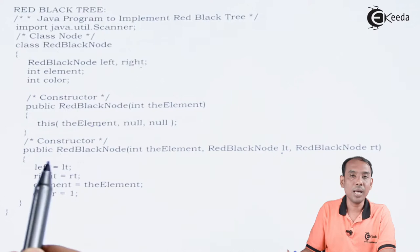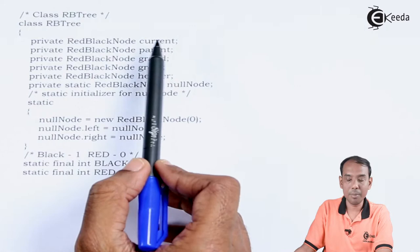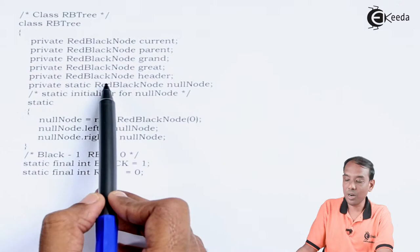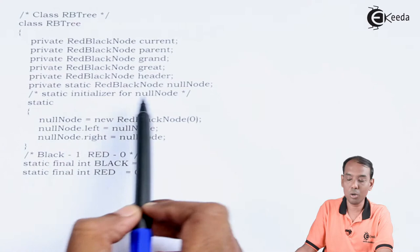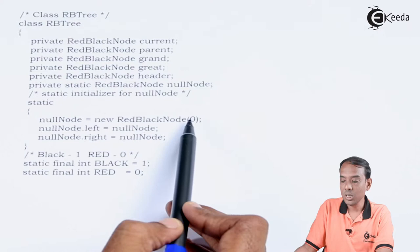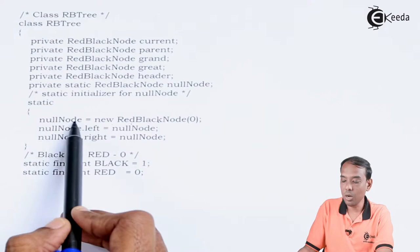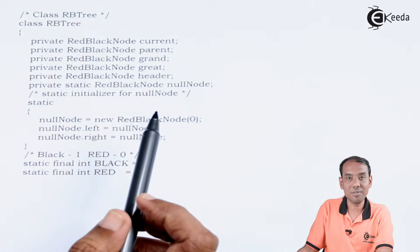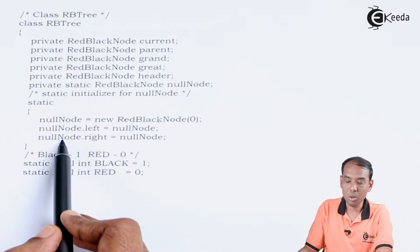I have defined a class called RBTree. Inside that I have created reference variables of the class RedBlackNode: current, parent, grand, great, and header. After that I have created one static reference variable of type RedBlackNode called nullNode. In the static initializer, nullNode is set to new RedBlackNode(0). Then we pass nullNode.left equal to nullNode and nullNode.right equal to nullNode — this is how you initialize the null node's left and right.